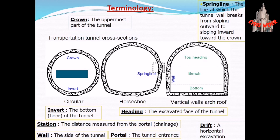We also have the spring line — the line at which the tunnel wall breaks from sloping outward to sloping inward towards the ground. Other terminologies include top heading, bench, and bottom.